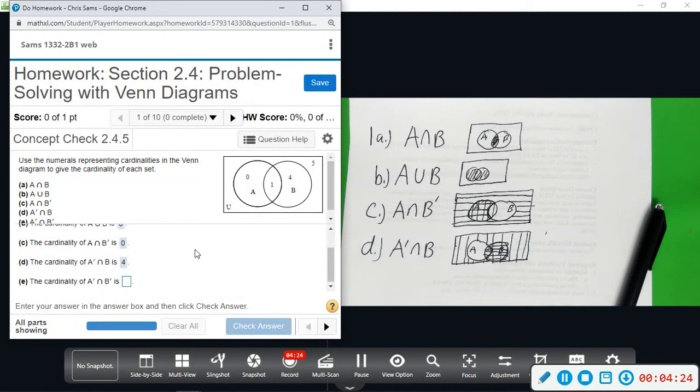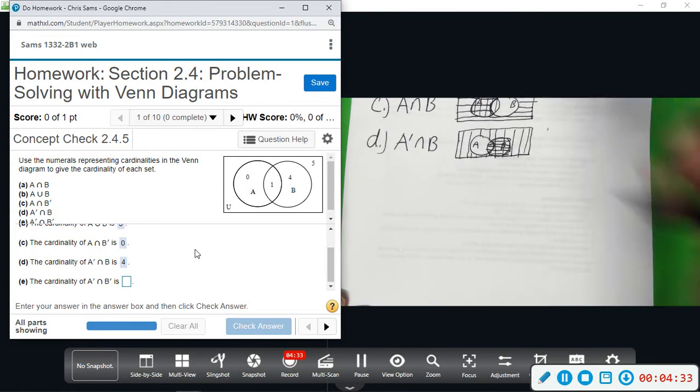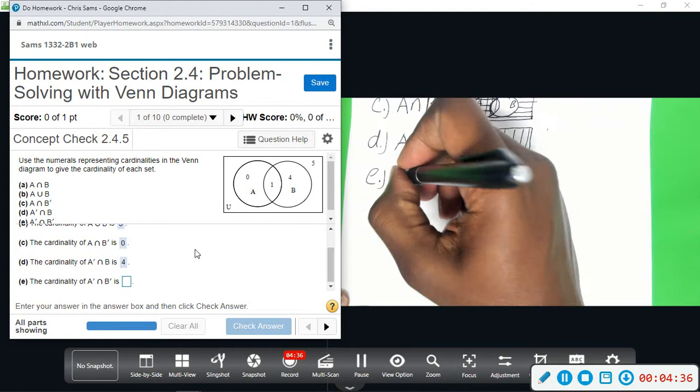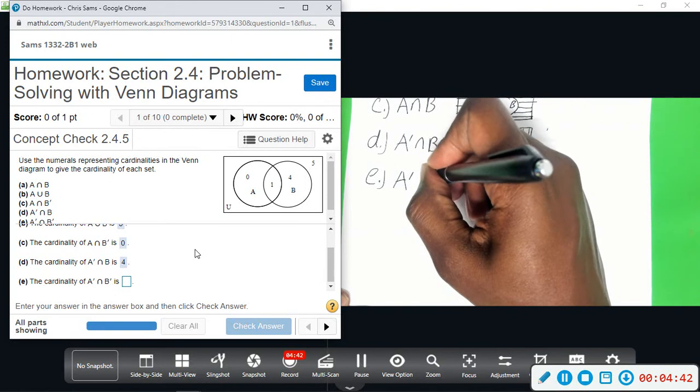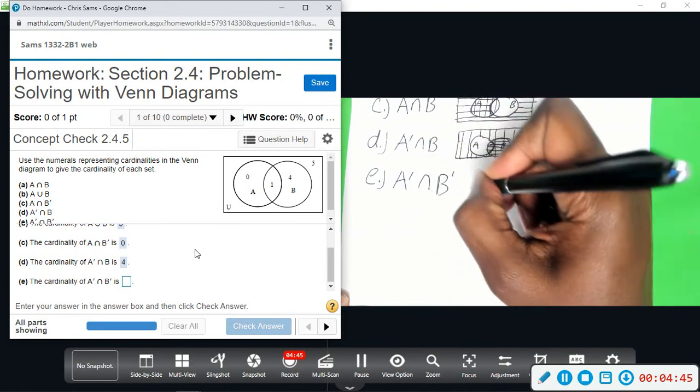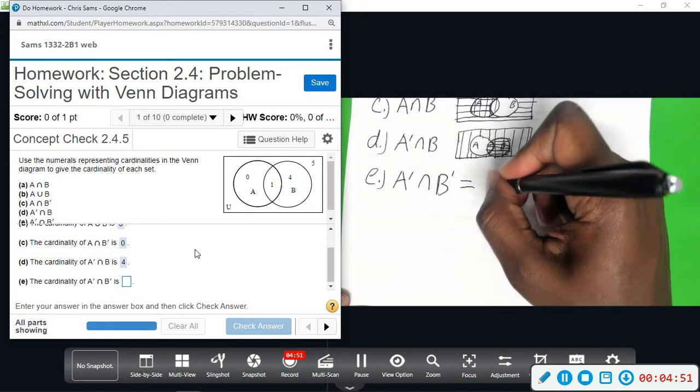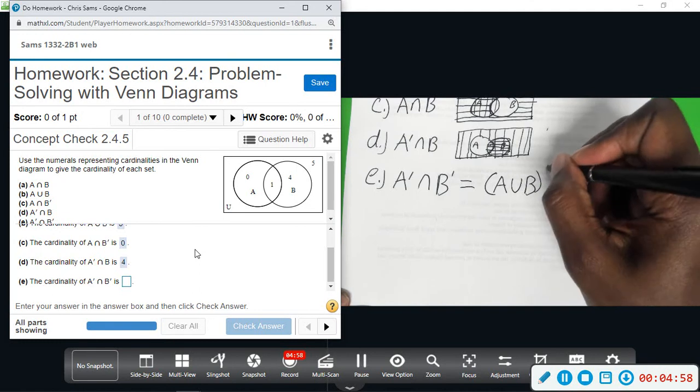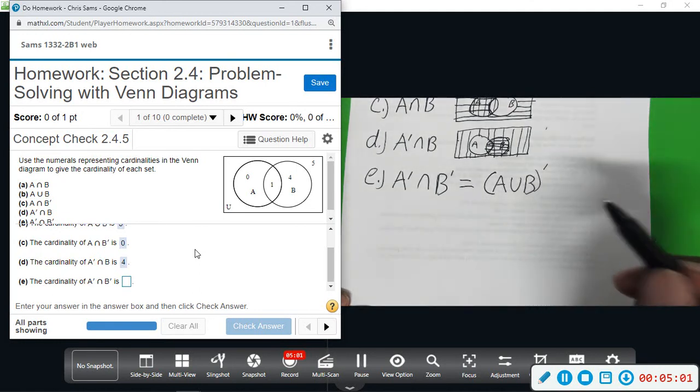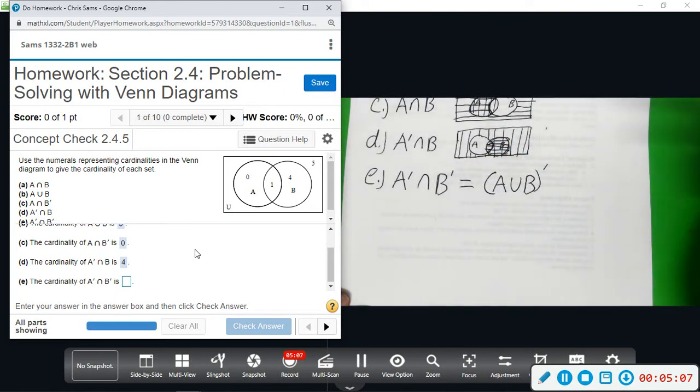And then the last part: we want to do A complement intersect B complement. This is one of De Morgan's laws. A complement intersect B complement is also the same as, if you'd like to pull the complement out, the complement of A union B. It's usually easier to do this form. I'll show both methods, but you want to work smarter and not harder.